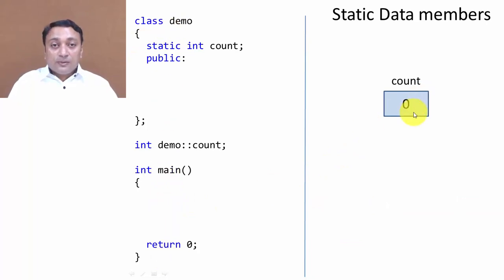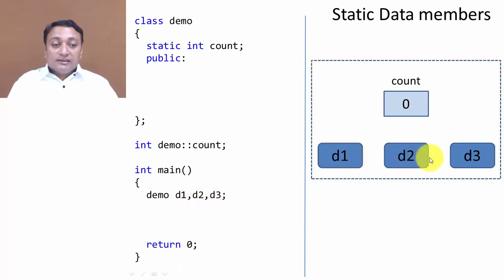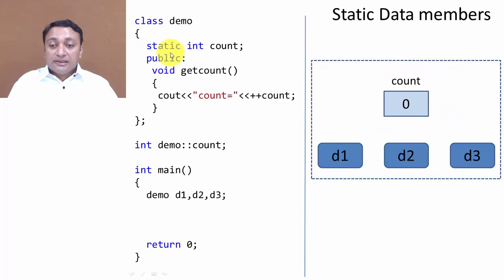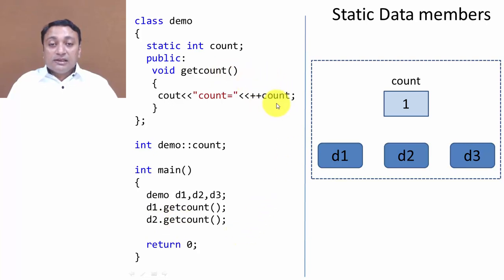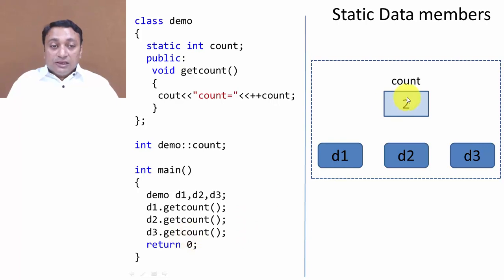It is initialized to zero because until an object is created, here I am creating three objects d1, d2, and d3. All objects will share this common count variable because it is of type static. Inside member function get_count, I am incrementing the value of count and displaying it. If I call d1.get_count it will become one, d2.get_count will access count as one and increment to two, and d3.get_count will read two and increment to three.